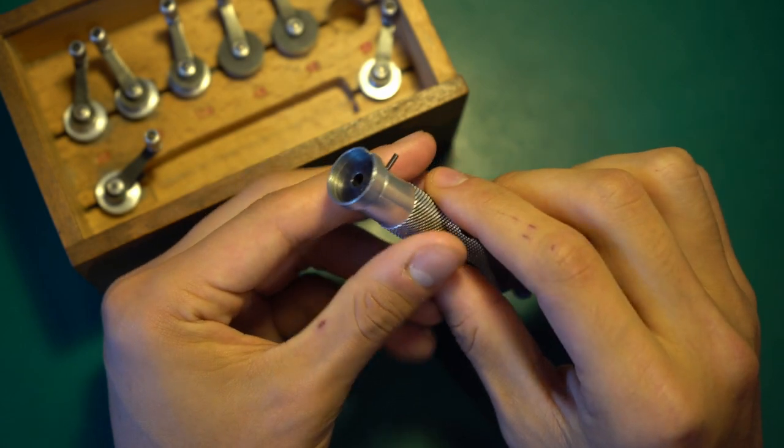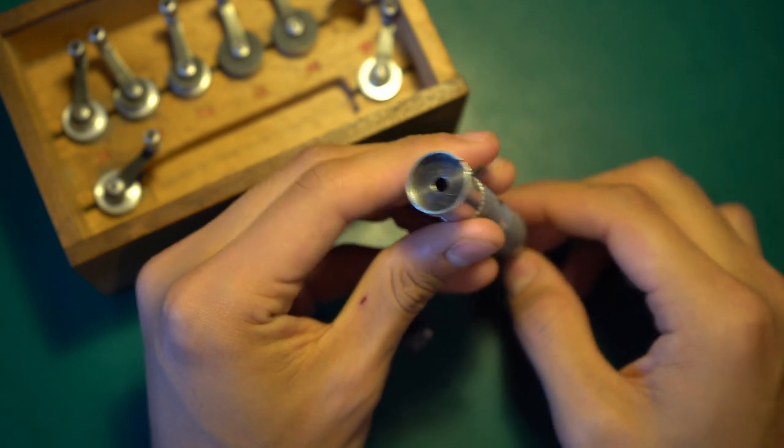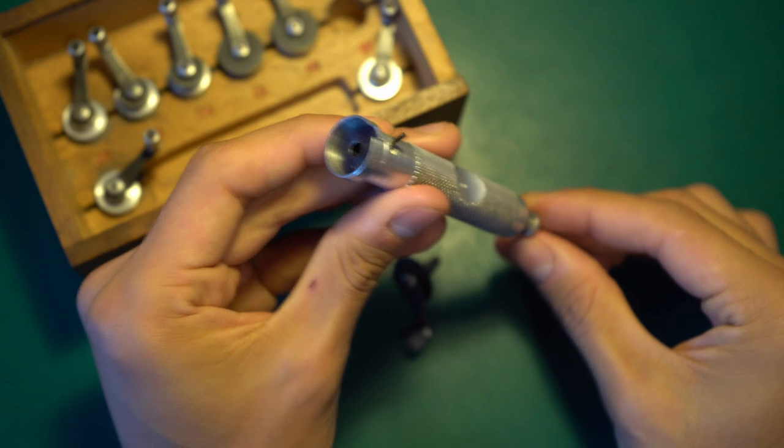This is basically to keep it safe so it doesn't wiggle around. The pusher on the end here can be used - when you press it down, it engages the pusher on the barrel, which then pushes the floor of the barrel up and the mainspring into the mainspring barrel.